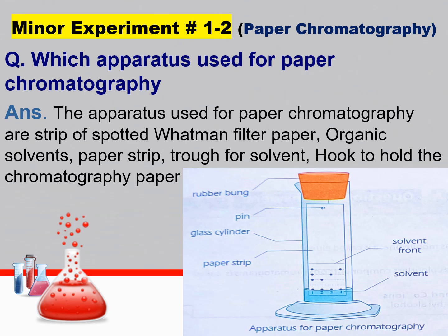For this experiment, a question may be given for labeling of the diagram. For that purpose, you must know the name of the apparatus. Which apparatus is used for paper chromatography? The apparatus includes: Whatman filter paper, organic solvent used as mobile phase, paper strips, trough for solvent, and a hook to hold the chromatographic paper. I will show you the diagram also — he may give you a simple diagram without labeling and you are supposed to label it.